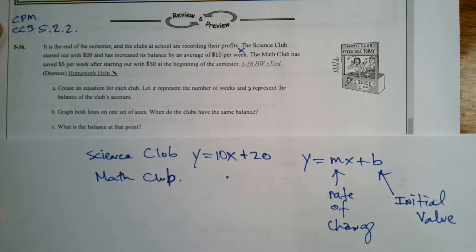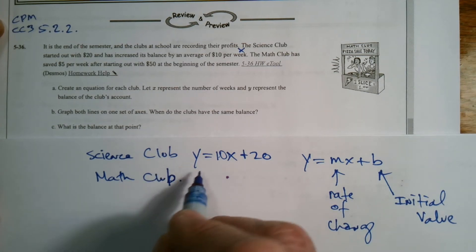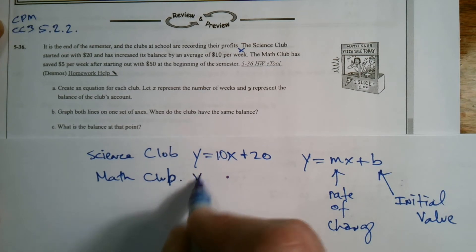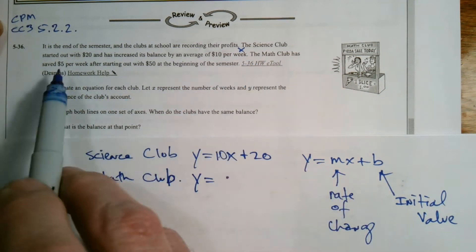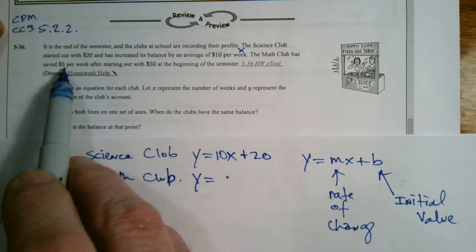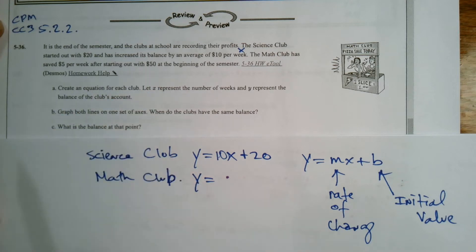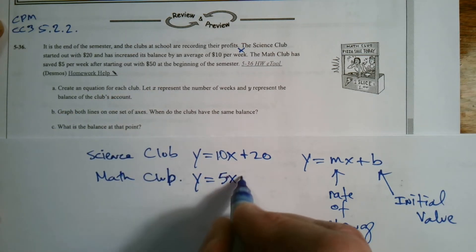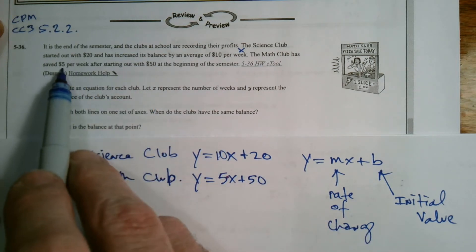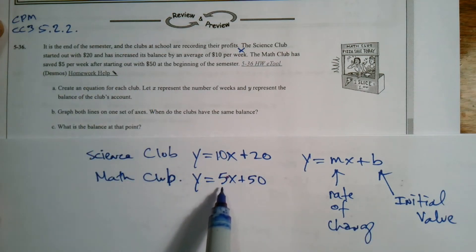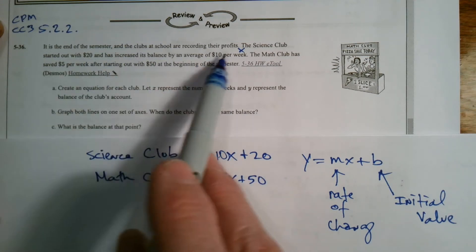For the Math Club, we would say Y equals what? In this case, Math Club has saved $5 per week and started out with, so our initial value of $50. So that would be 5X plus 50. $5 per week, that's my M, my rate of change. And then $50 is my initial value. There's the equations or rules that we have for that situation. So I did A.